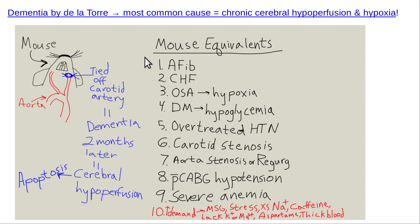Delatore is really smart. He says: look at the risk factors for Alzheimer's - diabetes, high blood pressure, obesity, atrial fibrillation, atherosclerosis, impotence, high-fat diet, smoking, alcoholism. Those are all risk factors for atherosclerosis and hypertension. If two diseases have the exact same risk factors, maybe they're the same disease.